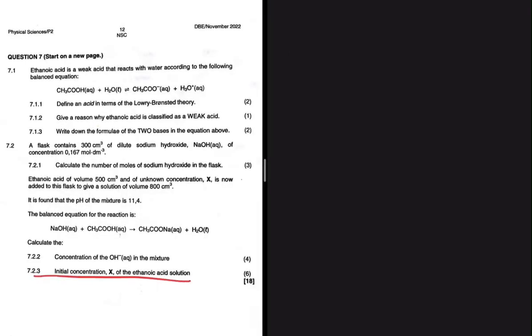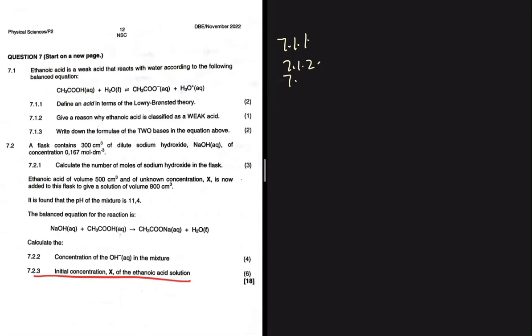7.2.3 is quite a tricky one, but let's start with 7.1. I'll let you do 7.1.1 because that's just a definition. 7.1.2 says: give a reason why ethanoic acid is classified as a weak acid. We classify it as a weak acid because it ionizes incompletely — that's why we classify it as a weak acid.